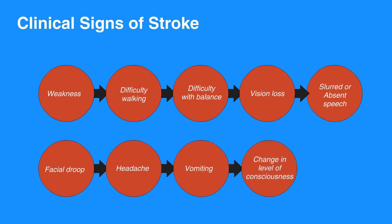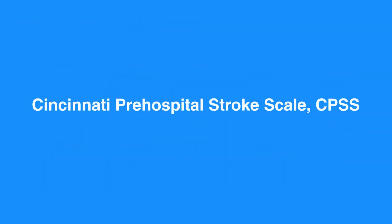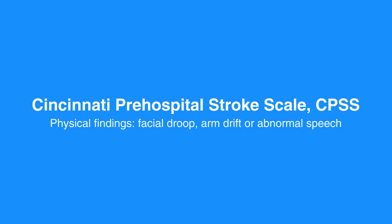Not all of these symptoms are present, and the exam findings depend on the cerebral artery affected. The Cincinnati Pre-Hospital Stroke Scale, or CPSS, is used to diagnose the presence of stroke in an individual if physical findings such as facial droop, arm drift, or abnormal speech are seen. Individuals with one of these three findings as a new event have a 72% probability of an ischemic stroke.